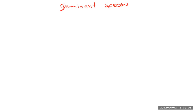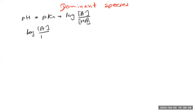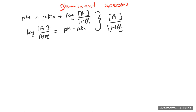The Henderson-Hasselbalch equation looks like this: pH equals pKa plus log of the conjugate base concentration over the weak acid concentration. From this we can see that log([A⁻]/[HA]) equals pH minus pKa, and therefore the base-to-acid ratio [A⁻]/[HA] equals 10 to the power of (pH minus pKa).